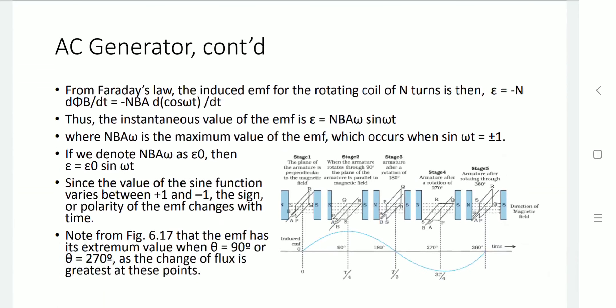Now to get a change in the flux, EMF epsilon equals minus d(phi)/dt. If we have a number of turns N of the coil, then epsilon becomes minus N d(phi_B)/dt. Since phi equals BA cos(omega t), substituting: epsilon equals minus N times d[BA cos(omega t)]/dt. Here, area A, magnetic field B, and number of turns N are all fixed; only theta equals omega t is changing. So we differentiate cos(omega t) with respect to t.